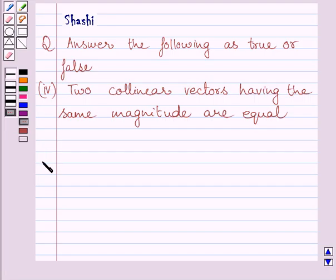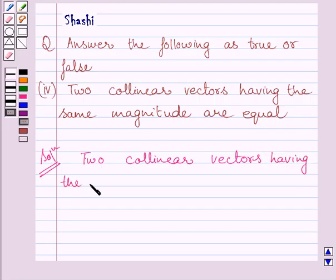Let us now start with the solution. Now the given statement is, two collinear vectors having the same magnitude are equal. We have to find if this statement is true or false.